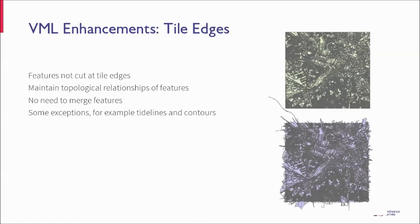Working in response to customer feedback, we've changed the tile structure in the new VectorMap Local. Features no longer end at a tile edge — they're non-tile bound features, or 'hairy tiles' depending on which terminology you've heard. Essentially this maintains the topological relationships of features, meaning you get the whole of the feature even if it goes outside the tile. This reduces the need to merge features back together if you're taking two adjacent tiles, hopefully removing some of the processing workload that many customers were seeing. There are some features this doesn't work for, such as tide lines and contours, but all other features you'll now see coming over the edge of the tiles, as shown in the picture on the slide.